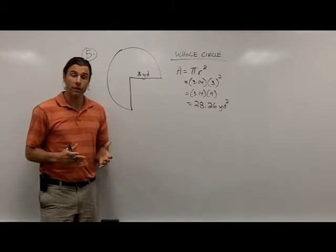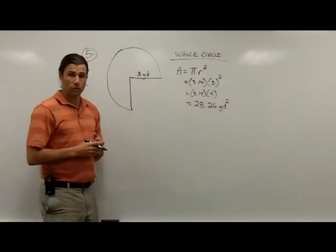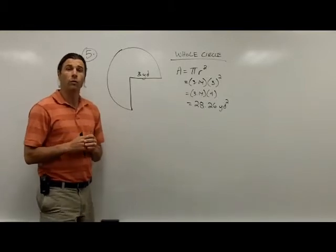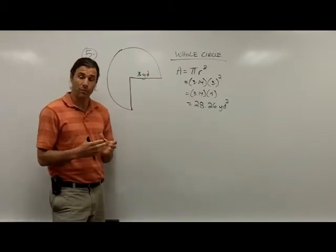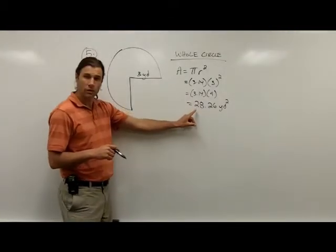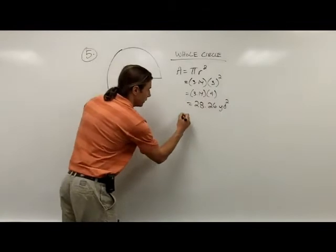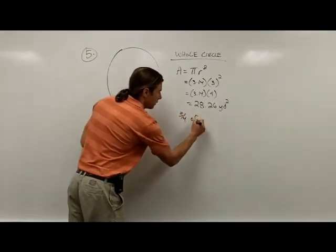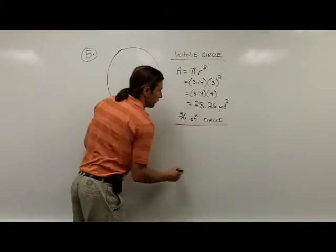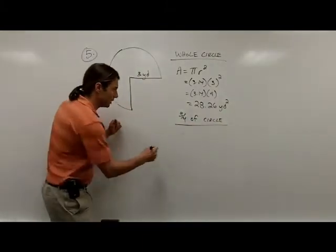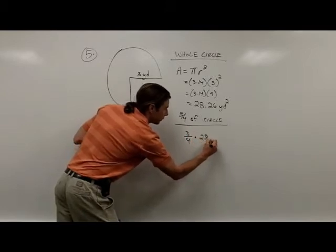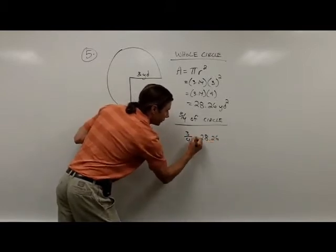Now that would be great if I was finding the area of the whole circle, but notice we just have 3/4 of the circle here. So to find 3/4 of something, what we want to do is multiply by 3/4. So I need to take this 28.26 and multiply it by 3/4.